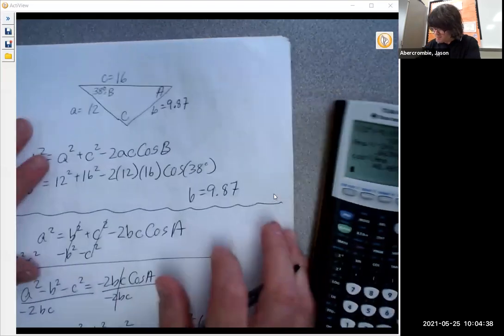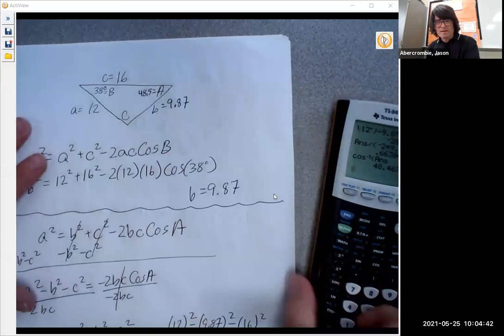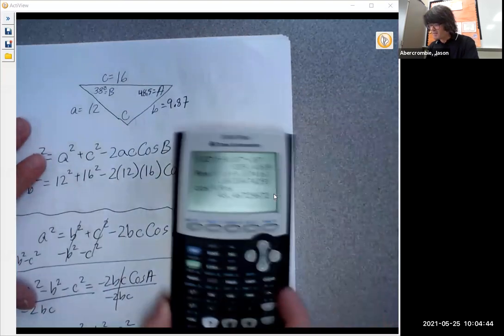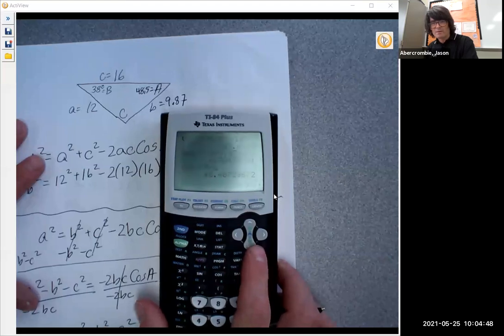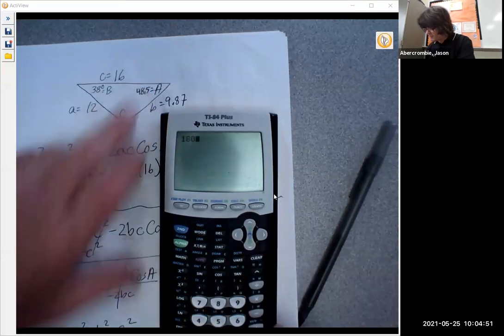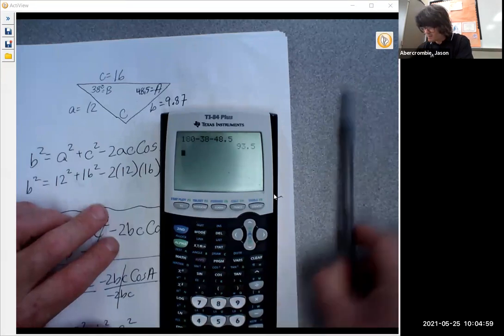So that's A. Let's go back to my picture and say this is 48.5 degrees. And now the only thing left is angle C, and all you have to remember is that all angles in a triangle add to 180. I'm going to take 180, we're going to subtract these two angles, and whatever is left will be my angle C, 48.5. So angle C is 93.5.